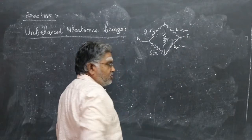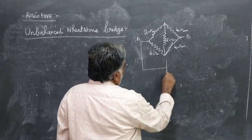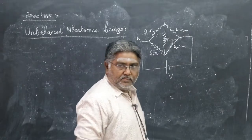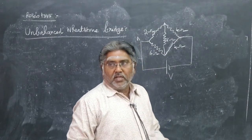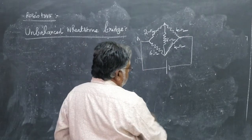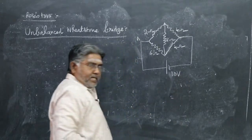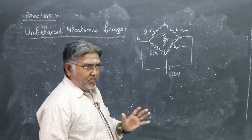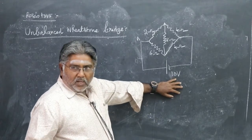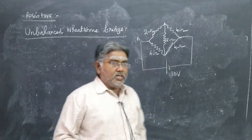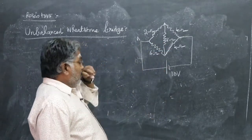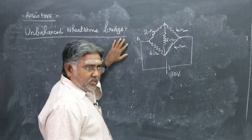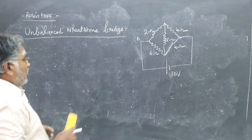Since the effective resistance doesn't depend on the applied voltage, we can imagine some voltage applied here. You can take it as V and proceed, but that may make equations harder to solve. Instead, we can take it as 10 volts. You could also choose 100 volts, but 10 volts is convenient given the range of resistances, making calculations easier.